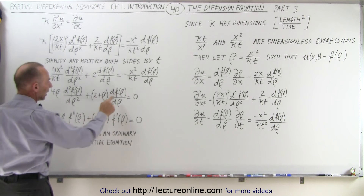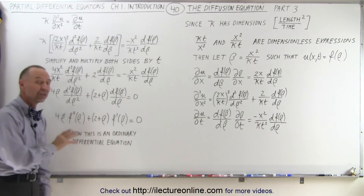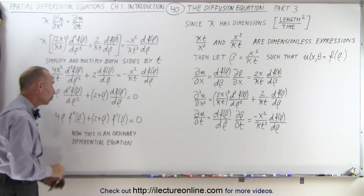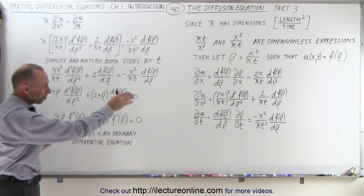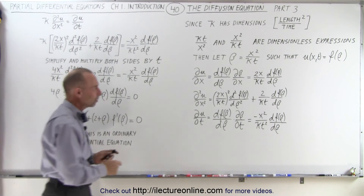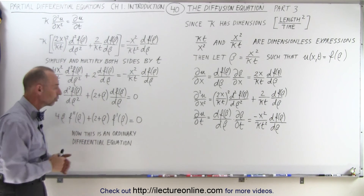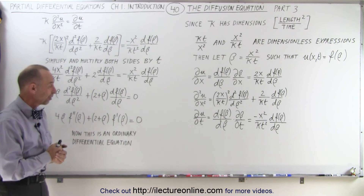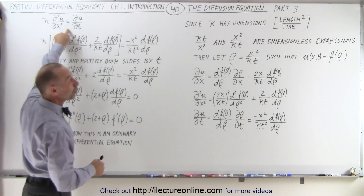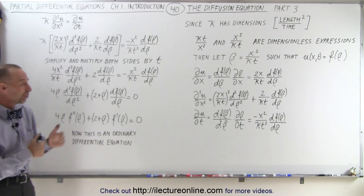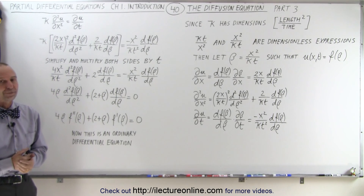Instead of writing the second derivative of the function of beta with respect to beta, we simply write f double prime, and the first derivative as f prime. This is now an ordinary differential equation, which we can solve using standard ODE principles. We've turned a partial differential equation into an ordinary differential equation through this substitution. In the next video, we'll actually show you the solution of that ODE, which then serves as the solution to the original partial differential equation. That's the mathematical trick — stay tuned!